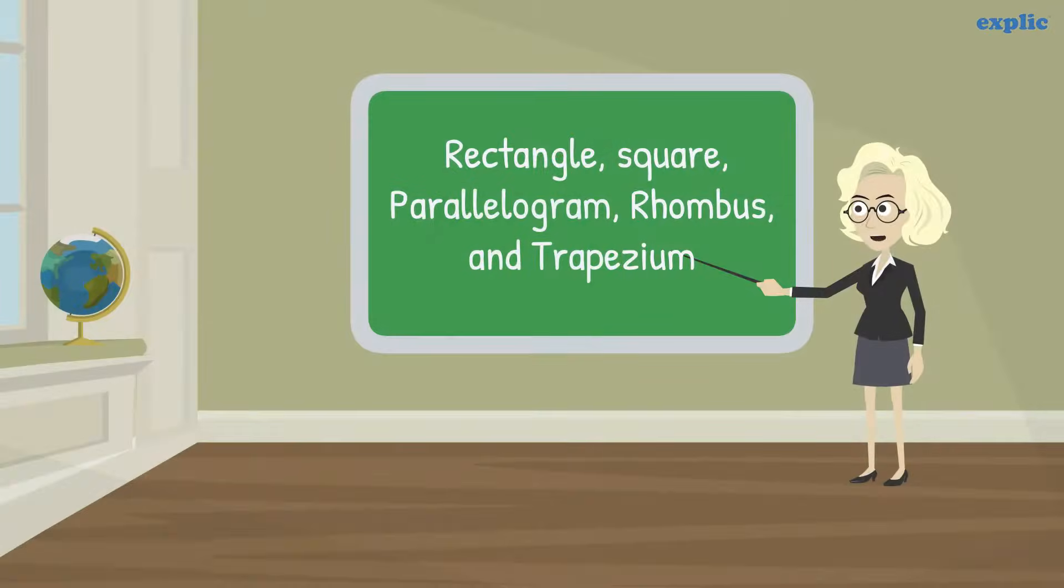A quadrilateral mainly can be categorized in five different ways: Rectangle, Square, Parallelogram, Rhombus, and Trapezium. Let's discuss them one by one.